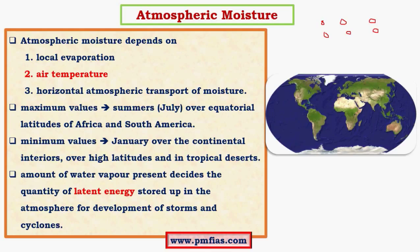Coming to horizontal atmospheric transport of moisture — this is essentially the winds that blow over the ocean surface. Maximum values of atmospheric moisture occur in summers over equatorial latitudes of Africa and South America, where warm ocean currents cause greater evaporation. Least values exist in January over continental interiors such as Siberia, Canada, and Greenland, where the climate is very cold and the air is very dry.